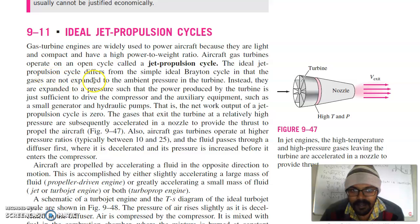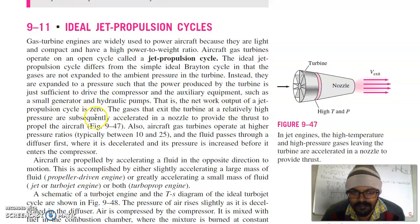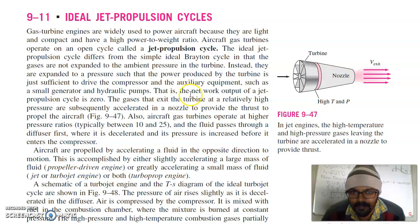The ideal propulsion cycle differs from the simple ideal Brayton cycle in that the gases are not expanded to ambient atmosphere in the turbine. Instead, they are expanded to a pressure such that power produced by the turbine is just sufficient to drive the compressor and the auxiliary equipment such as the small generator or hydraulic pumps. That is, the net work output of jet propulsion cycle is zero. In case of a jet propulsion engine, the turbine power is used to run the compressor and the thrust produced by the gases is used to propel the aircraft.